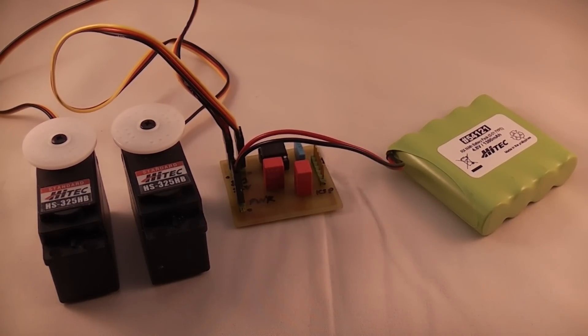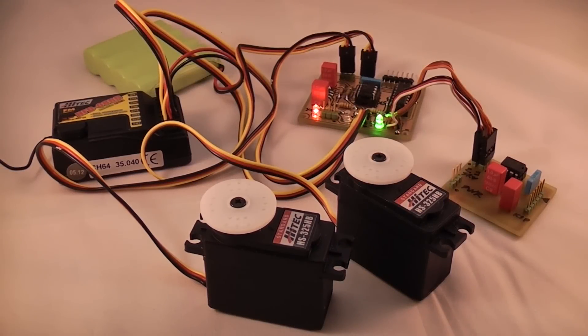The servo switcher monitors one channel of the radio control receiver using the capture compare module on the PIC 12F683. This allows the servo switcher's onboard microcontroller to time the incoming pulses.